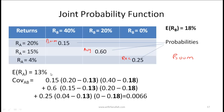The first step in calculating covariance is to find the expected return of A and B. Taking the weighted average: 0.15 × 20% + 0.6 × 15% + 0.25 × 4% gives an expected return on stock A of 13%. Using the same logic, the expected return on stock B is 18%.